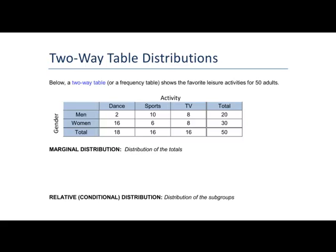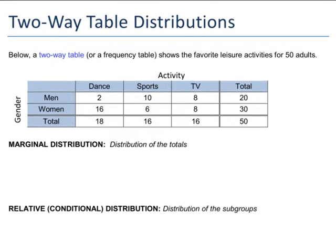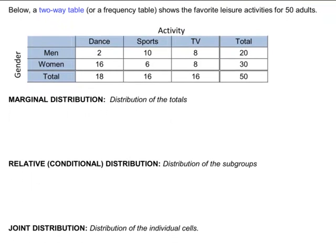In our two-way table distribution, we can talk about three different aspects of it. The first aspect I want to talk about is a marginal distribution. Marginal distributions are distributions of the totals. So I can look at the total for gender, and my total for gender is 20 for men, 30 for women, out of the total of the table which is 50. Or I can look at the totals for activity. So my totals for activity are 18, 16, 16, with a total of the table of 50. A lot of times the question that deals with marginal distributions are going to be something like total.